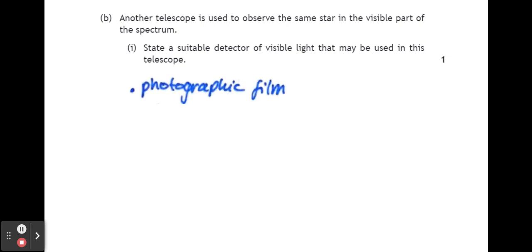So it could be a piece of photographic film. It could be a photodiode, like in a digital camera, for example. Or it could be just the retina of your eye. These are all suitable detectors of visible light.